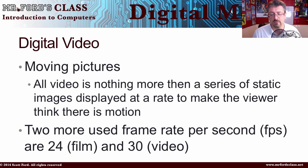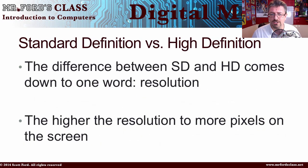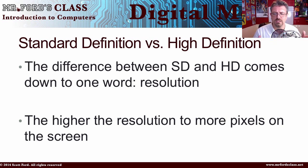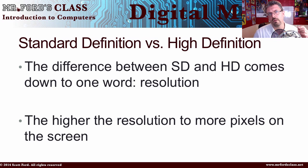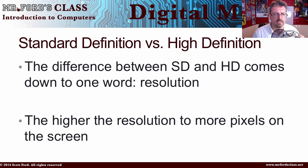Not to mention the expense of the equipment is also another big reason. Standard definition versus high definition — the difference between SD and HD — comes down to one basic word: resolution. You might be watching these videos in HD or in SD. You can tell by looking at the little gear icon on YouTube, where you can select SD or HD. Again, this comes down to resolution.